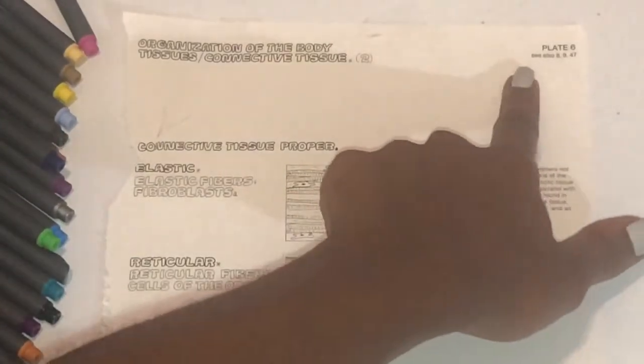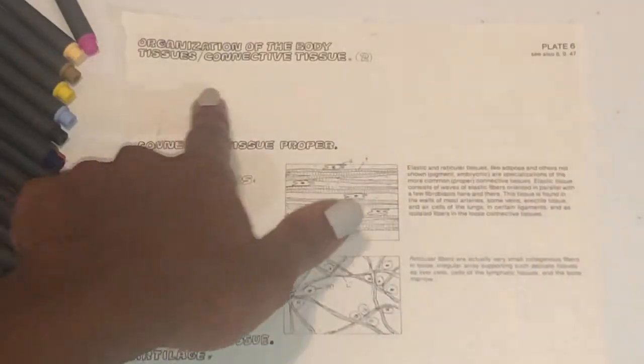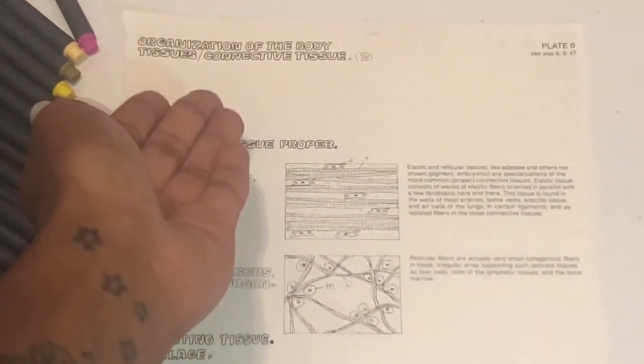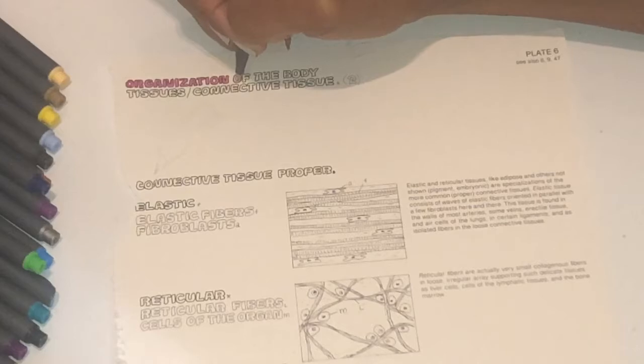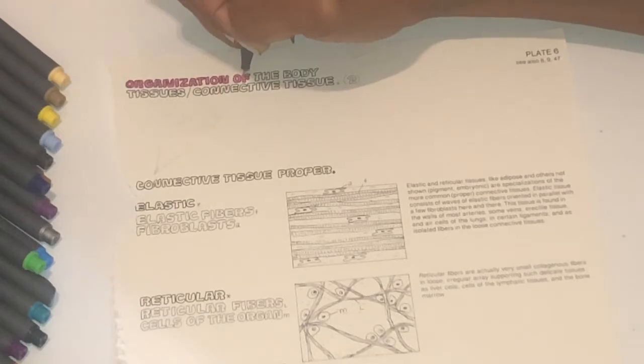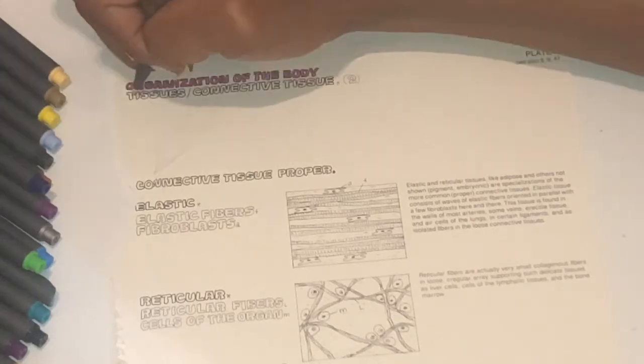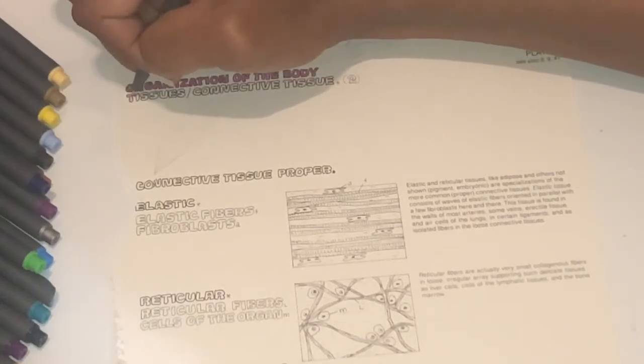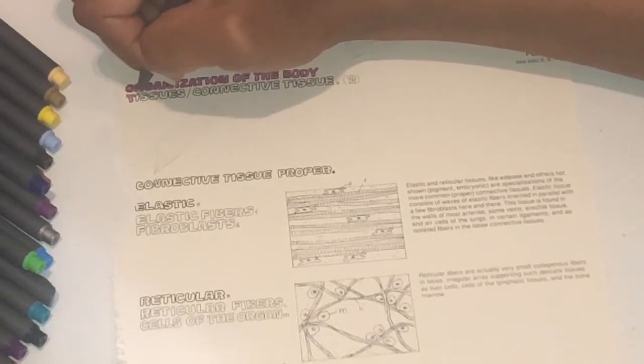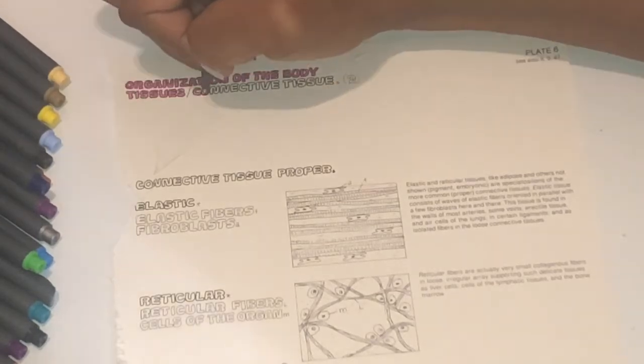So we are currently on plate six, organization of the body, tissues, connective tissues, part two. And I'm gonna go ahead and color this in. Organization of the body, tissues, connective tissue, part two.